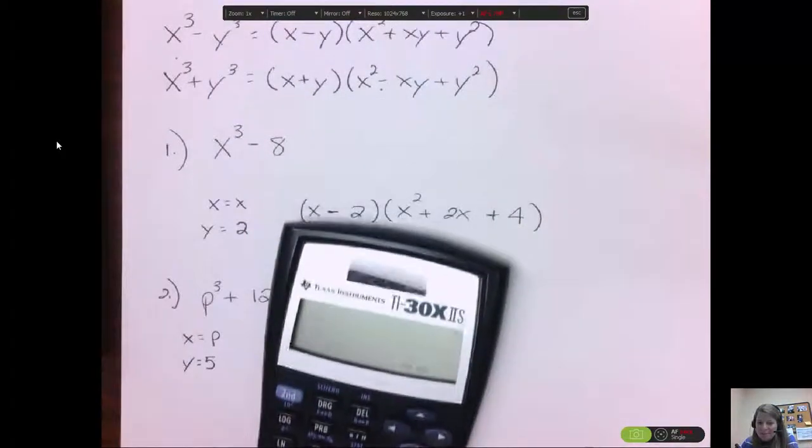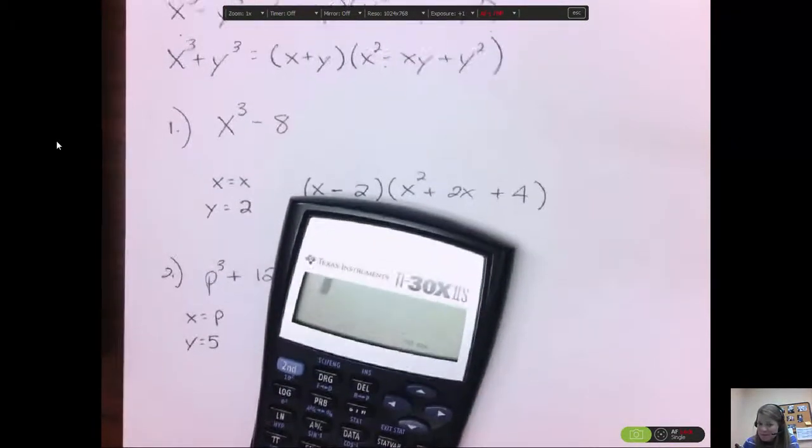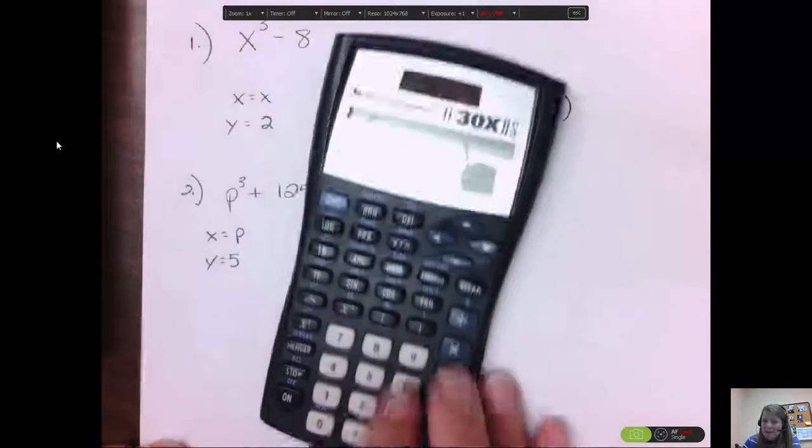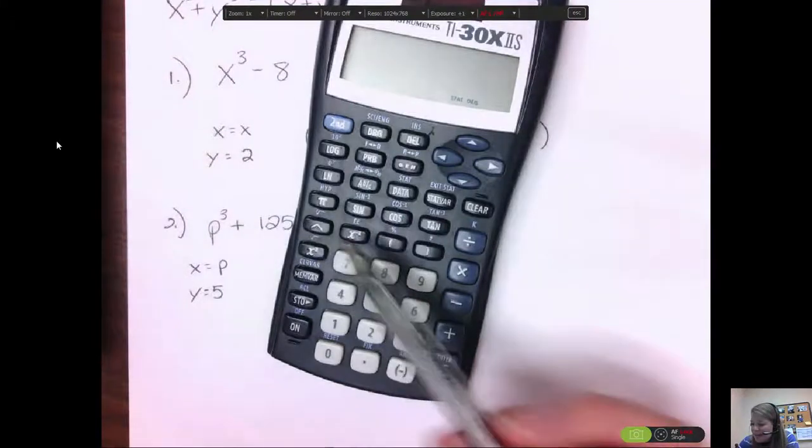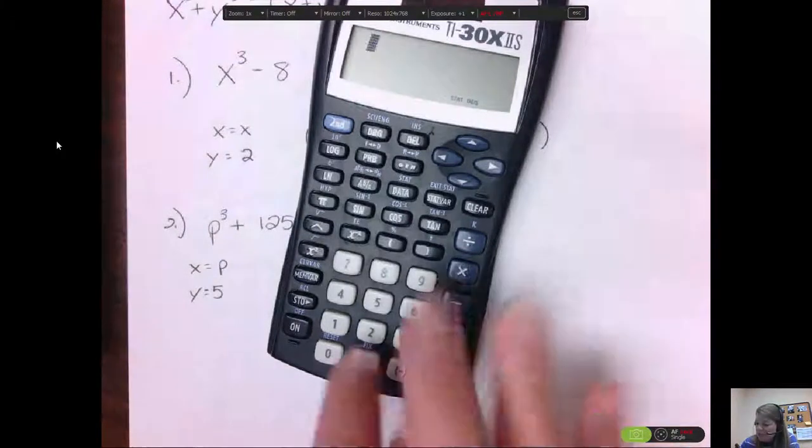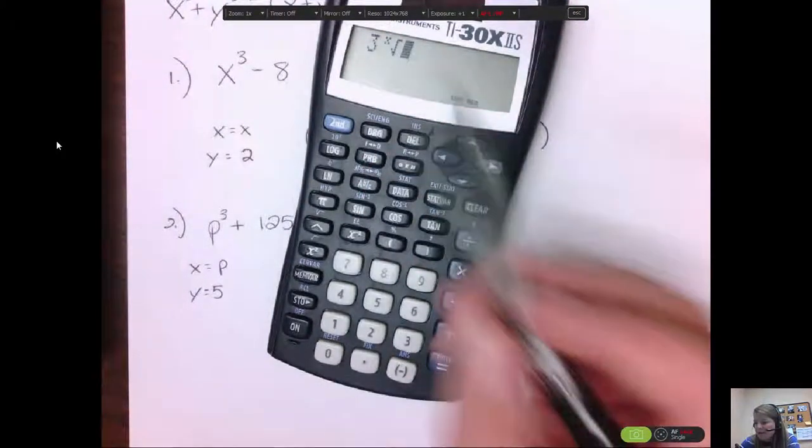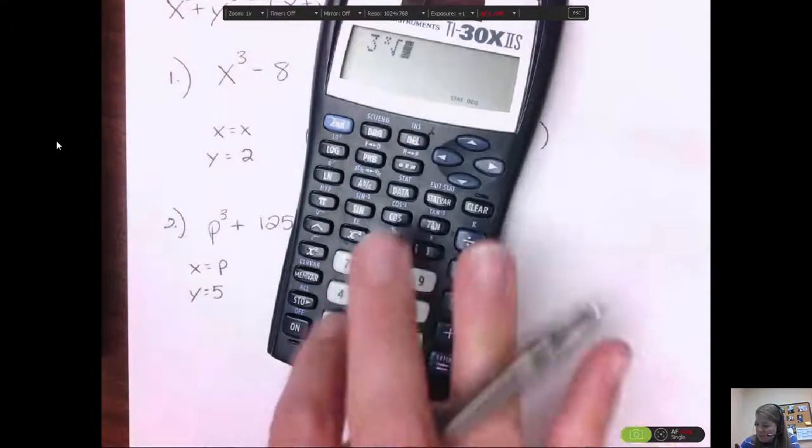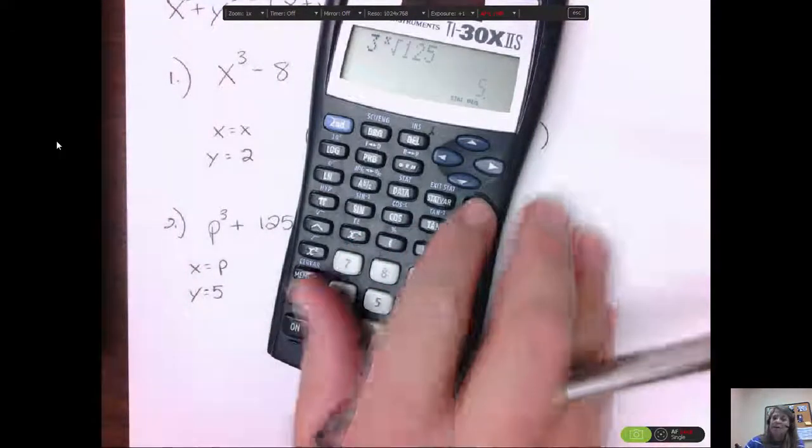And you could do third roots on your calculator if some of them get too big, because they get big really fast. So on this calculator, it has a key here that says x square root. So what you do is you hit 3, and then that button. So you're saying third root of 125, and you get 5. So if it's bigger, you could use your calculator to do the third root.